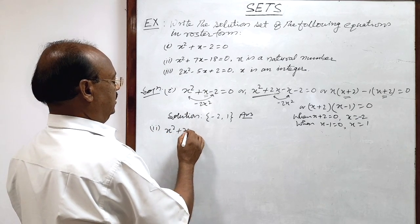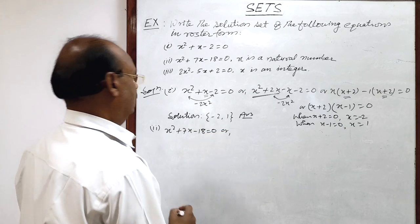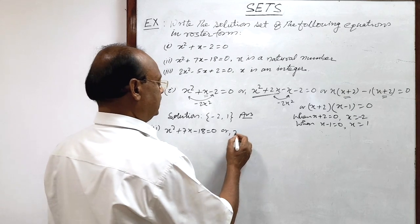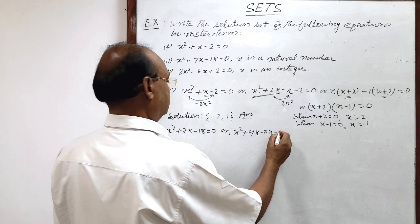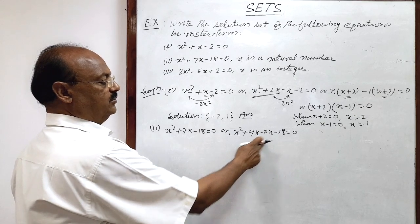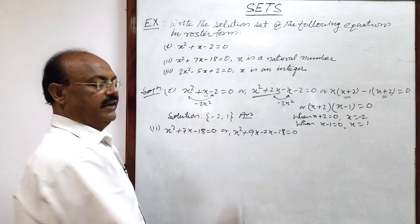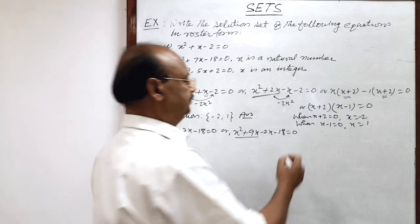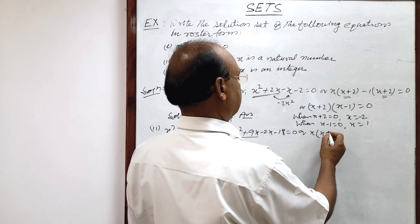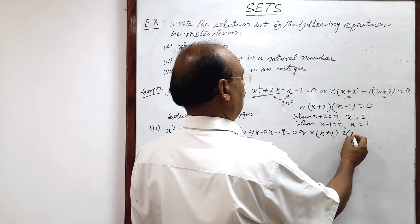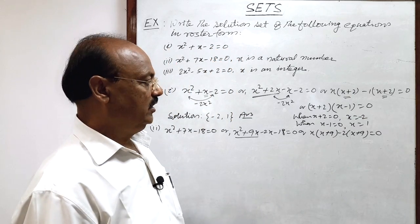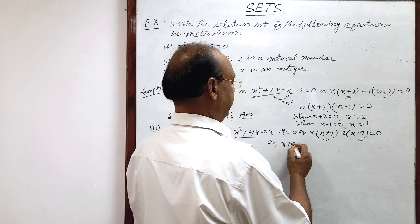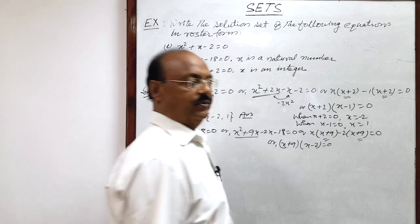For the second question, x squared plus seven x minus eighteen equals zero. The product of the first and last terms is minus eighteen x squared. So we split: x squared plus nine x minus two x minus eighteen equals zero. The product of the two middle terms is also minus eighteen x squared — correct. Taking x common from the first two terms gives x(x plus nine), and taking minus two common from the last two terms gives minus two(x plus nine).